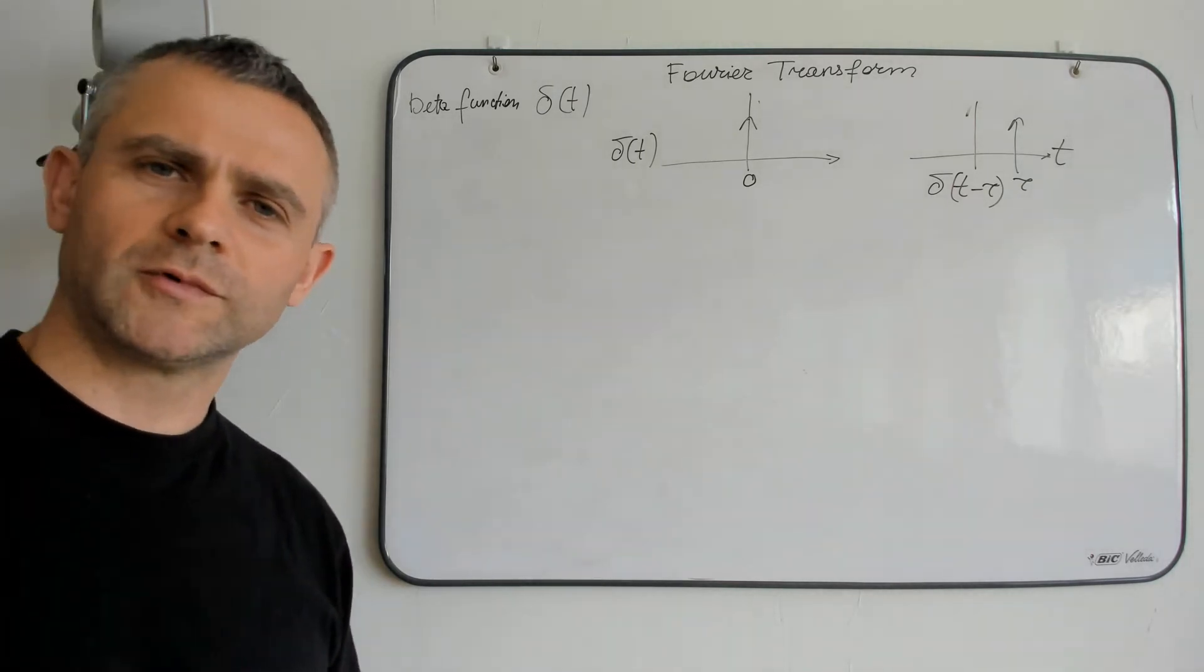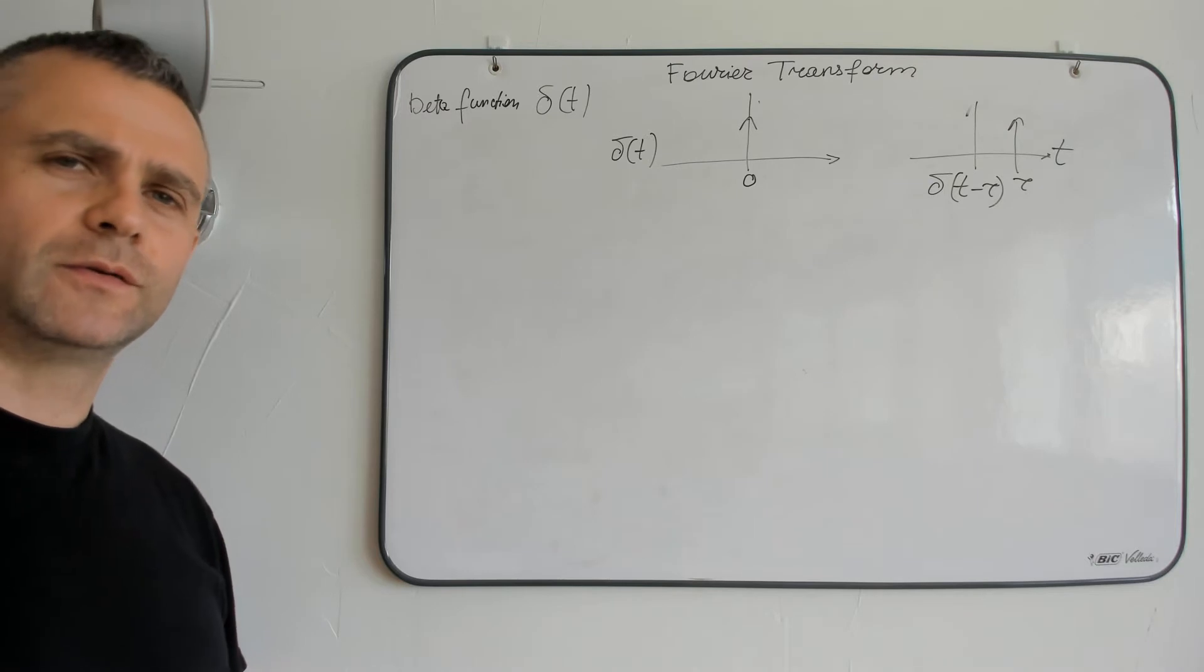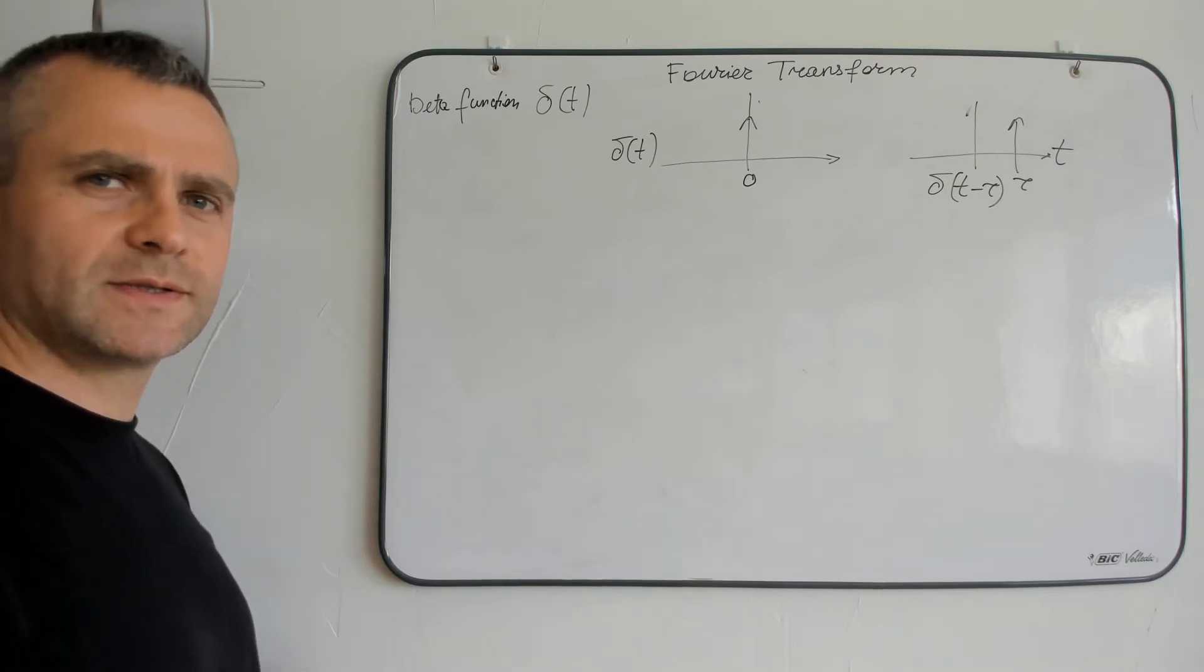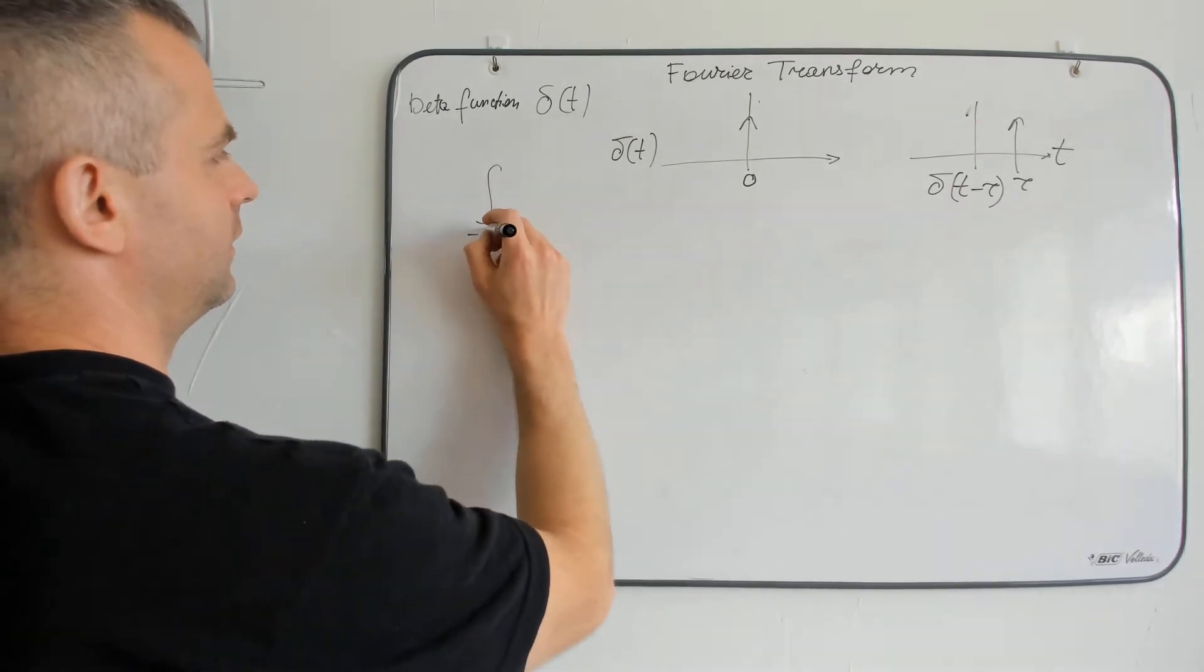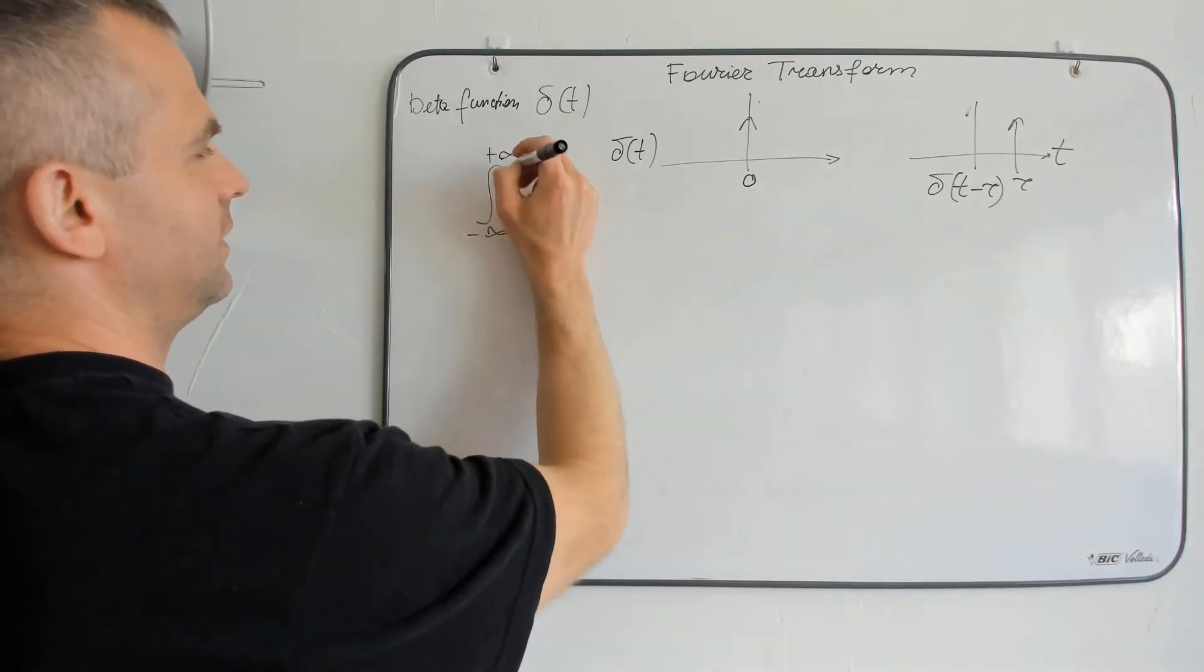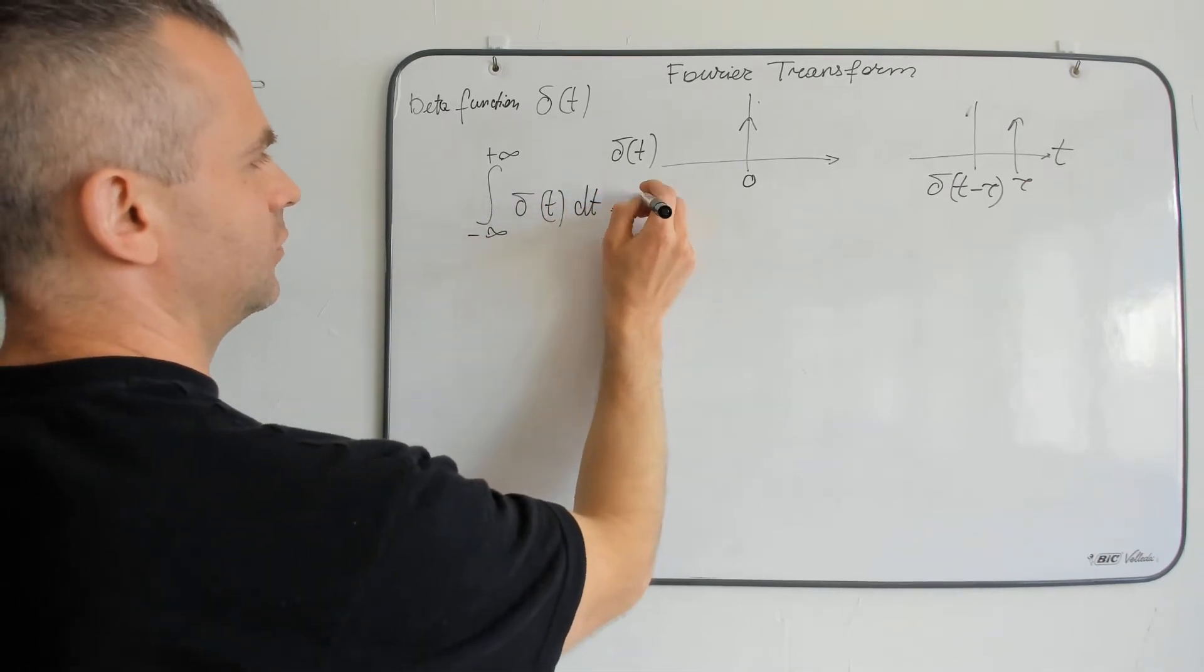One of the most important features of delta function is its area. Surface of a delta function is always equal to 1.